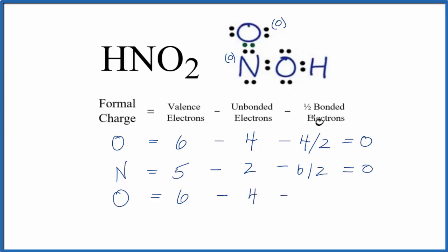minus one half of the bonded. So we have these two here and these two here. So two, four bonded. So six minus four, minus two, that equals zero. So this oxygen has a formal charge of zero.